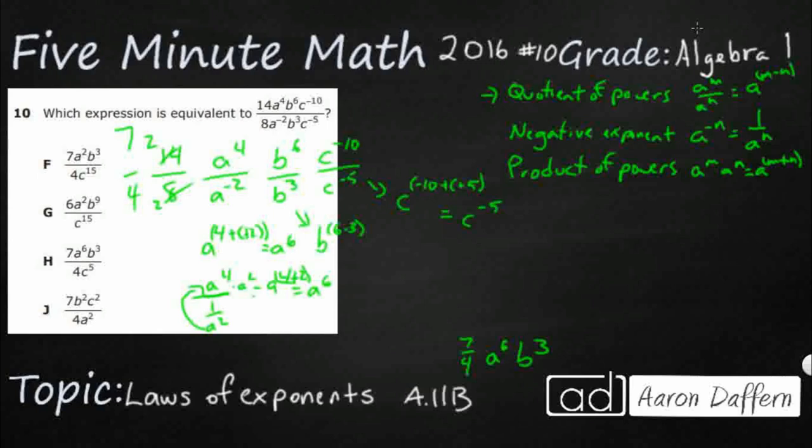Which is going to end up being 1 over C to the fifth. So, what we could do here is we could say C to the negative 5, because really what ends up happening is this is 1 over C to the tenth, and then this is 1 over C to the fifth.